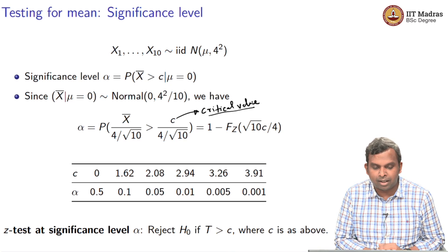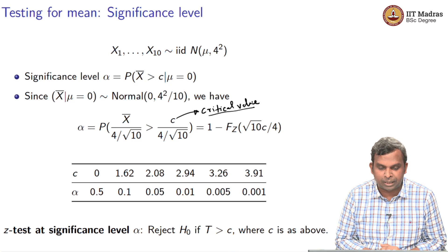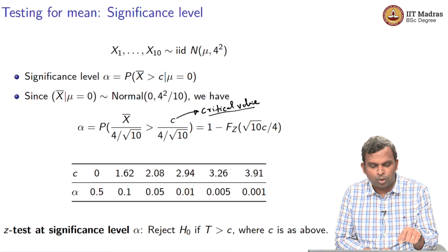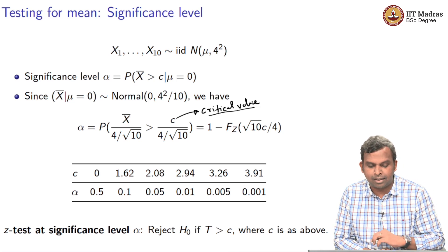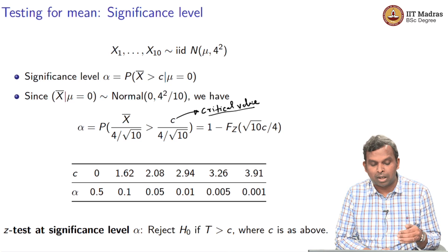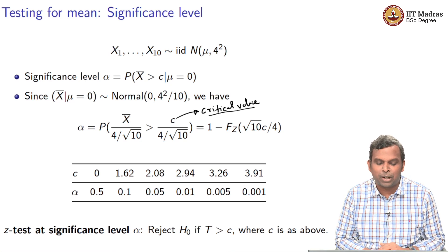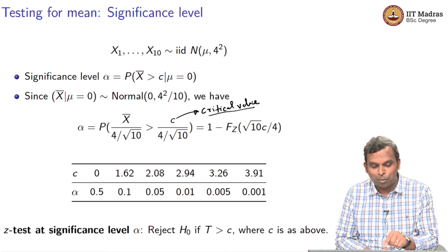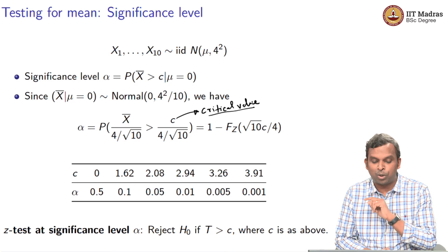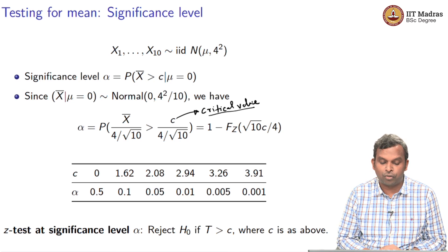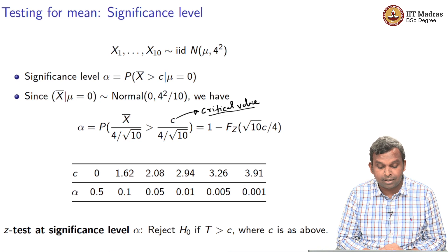For this particular variance 4 squared and 10 samples, you can evaluate C for different values of alpha: 0.5, 0.1 — 0.5 sounds like a ridiculously high significance level — but also 0.05 and 0.01, which are very reasonable type 1 error probabilities.